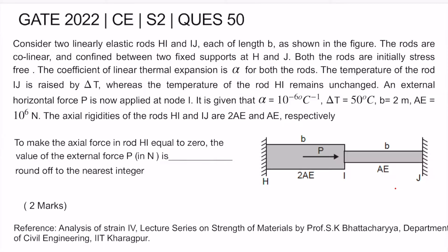Today I'll be discussing question number 50, set 2, GATE Civil Engineering 2022. Consider two linearly elastic rods HI and IJ, each of length b, as shown in the figure. The rods are collinear and confined between two fixed supports H and J. Both the rods are initially stress-free. The coefficient of thermal expansion is alpha for both the rods.